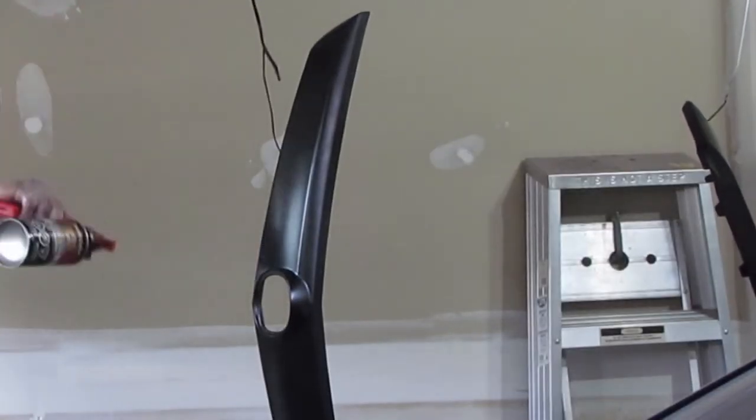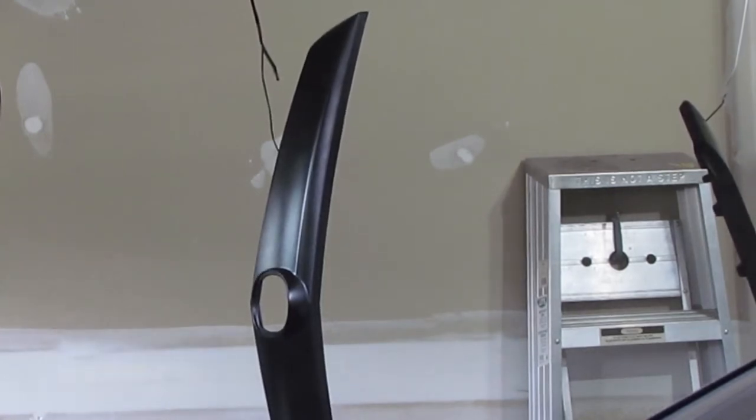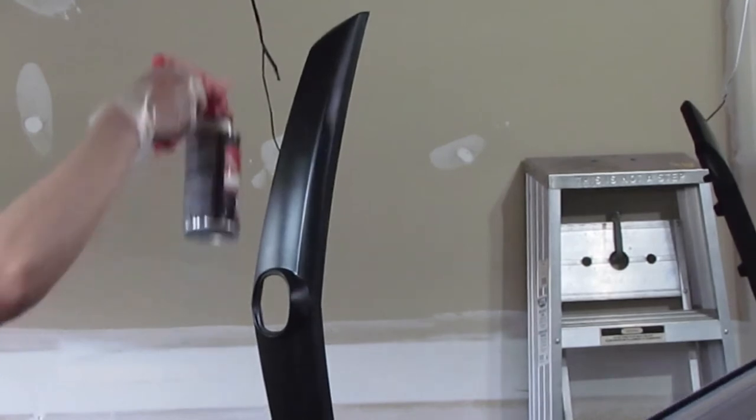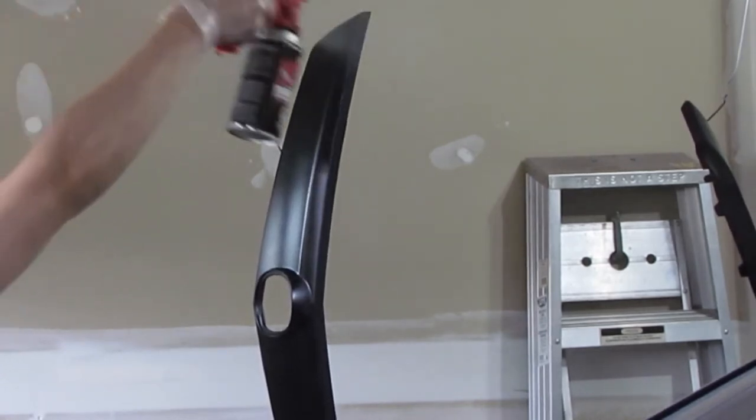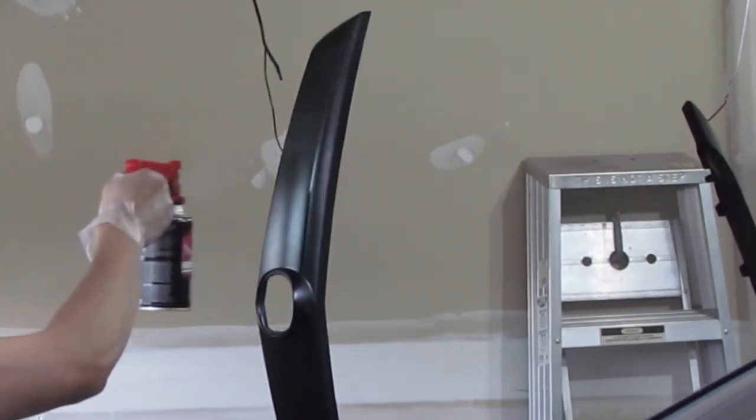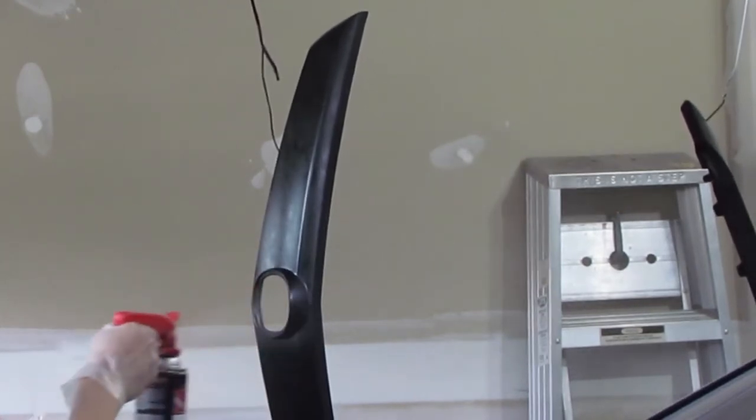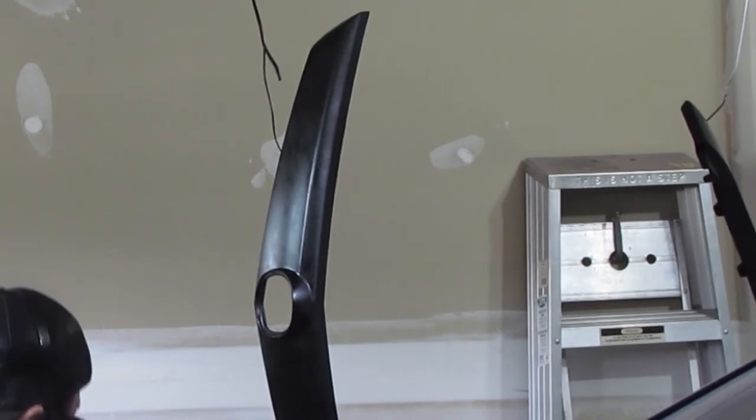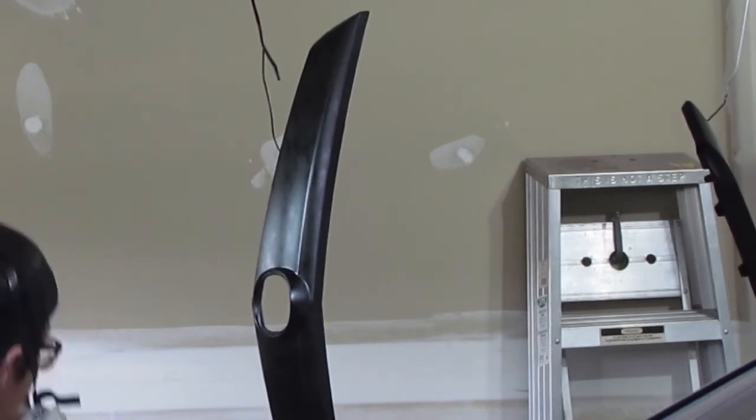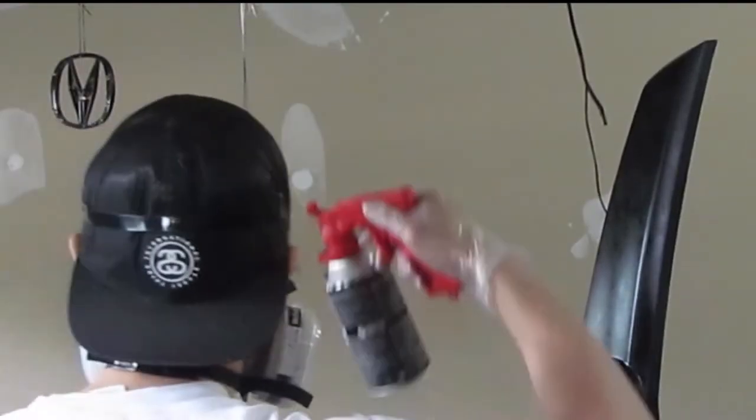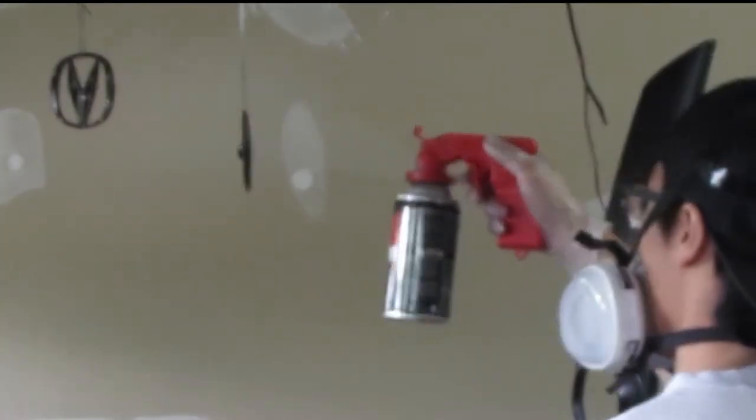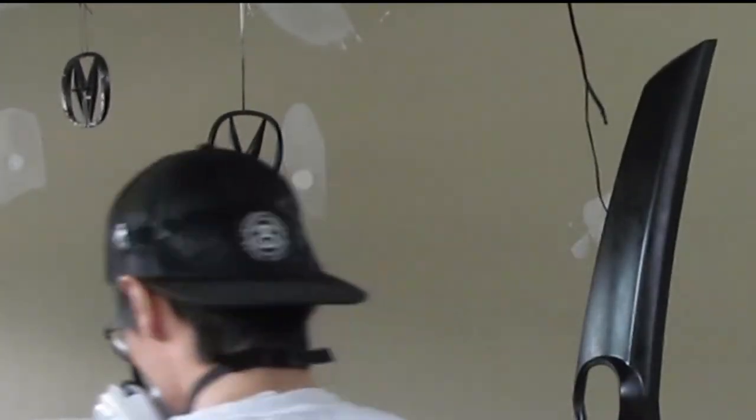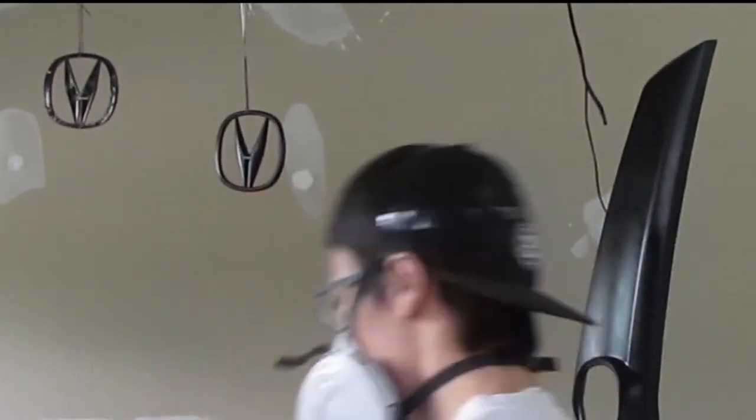Now I'm done with base coats and applying the clear. I always spray the hard-to-reach areas first. Then I'll get the top and work my way down with 50% overlap for the clear coat. For my first two clear coats, I'll do it light. When you do clear coat light, they'll melt into each other. For the last two coats, you want to do it heavy.